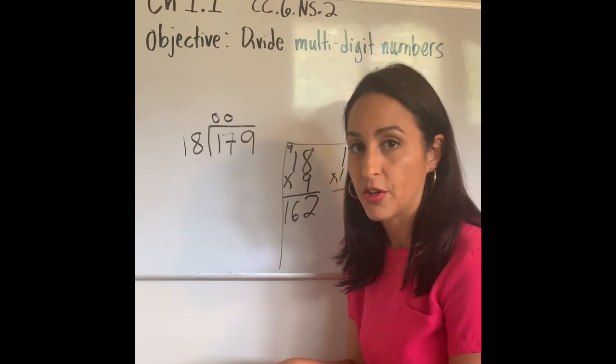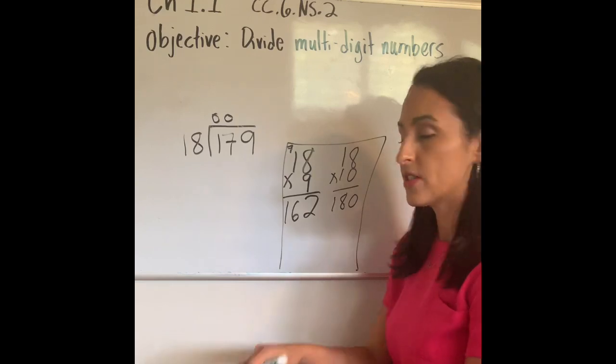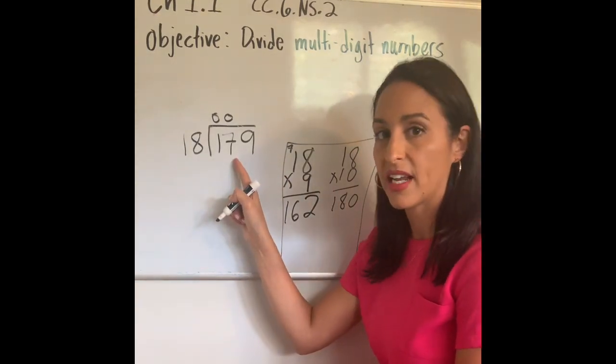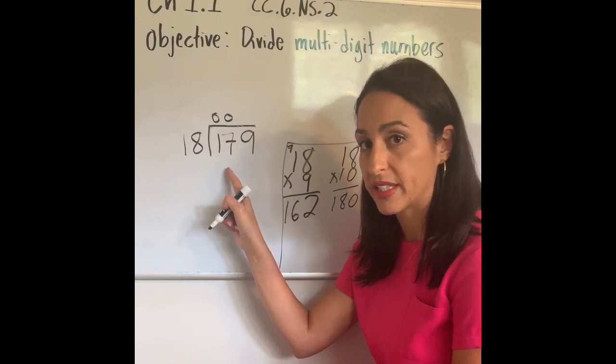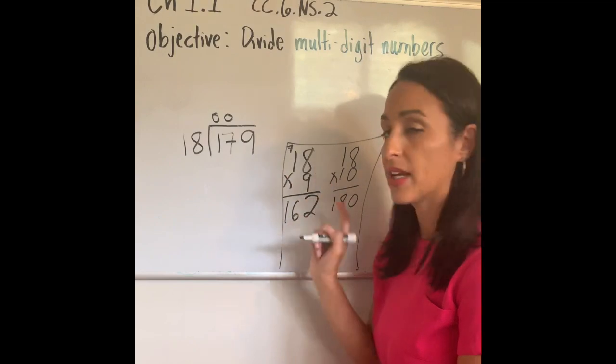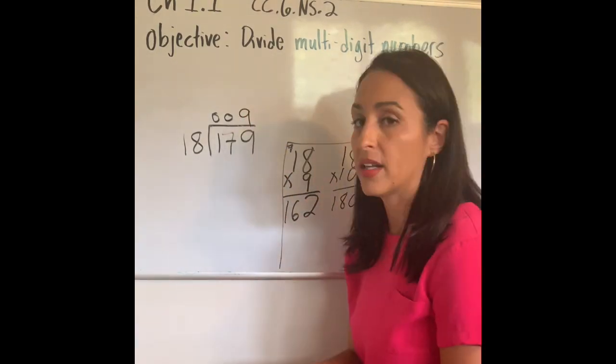Well, let's just check. If I do 18 times 10, when you multiply any number times 10, all you have to do is add a zero at the end of that number and it'll give you your answer. So we're going to write down 18 with a zero at the end—that's 180. 180 is more than 179. I should never pass the number that's in the dividend, so 18 times 10 is not my answer. But we can try 18 times 9. We put it at the top.